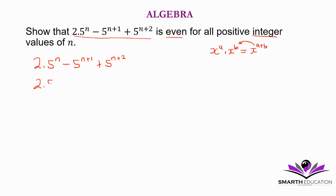It's going to be 2 times 5 to the power n minus 5 to the power n times 5 to the power 1 plus 5 to the power n times 5 to the power 2. Right.